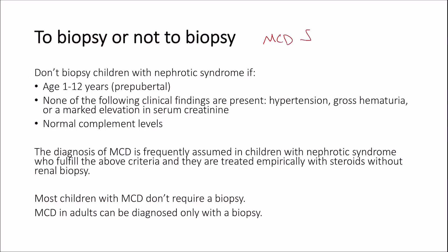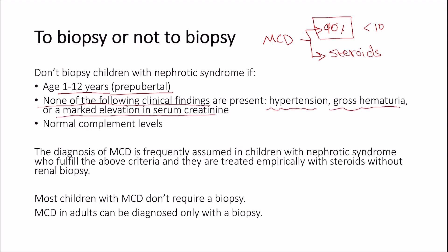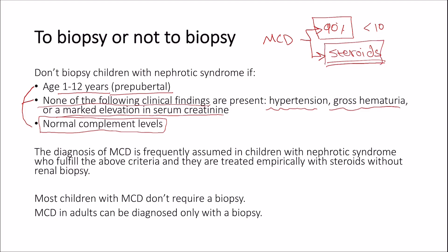Minimal change disease is responsible for 90% of cases of nephrotic syndrome in those under the age of 10, and it is very responsive to steroids. Because it is so common in this age group, children who are pre-pubertal between 1 and 12 years of age do not require biopsy unless they have atypical features. The presence of hypertension, gross hematuria, or marked elevation in serum creatinine should prompt us to consider alternative diagnoses and order a renal biopsy. Similarly, these patients must have normal complement levels. A child with nephrotic syndrome who fulfills these criteria is presumed to have minimal change disease and treated empirically with steroids. Failure to respond to steroids is an indication for biopsy.